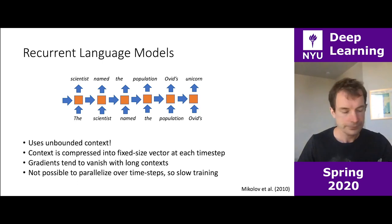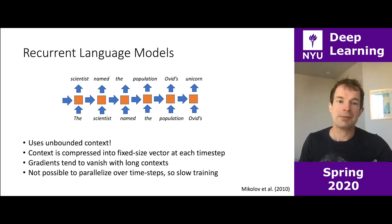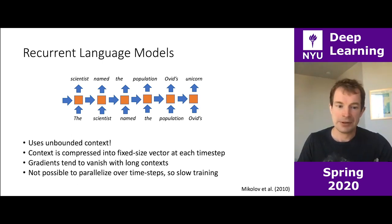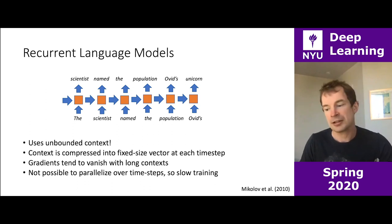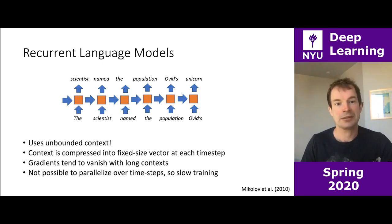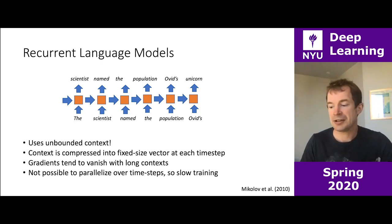RNNs are also quite slow, particularly for training. In order to build your state for a particular word, you have to build your state for every previous word first — essentially a big for loop over your entire document. The longer your document is, the bigger the loop, and most of these operations can't be computed in parallel — you have to do them sequentially. Modern GPU hardware is really based around being able to do operations in parallel.